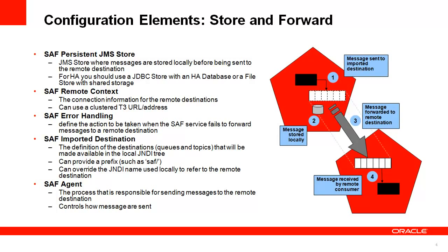There is also the Store and Forward error handling, which defines the policy or actions to take when the Store and Forward service fails to forward a message to the remote destination. You can redirect it, log it, or ignore it — although ignoring it is not advisable. Then there is the Store and Forward imported destination, which defines the remote destination that's been imported. You can prefix the JNDI name with a unique string such as SAF for Store and Forward.